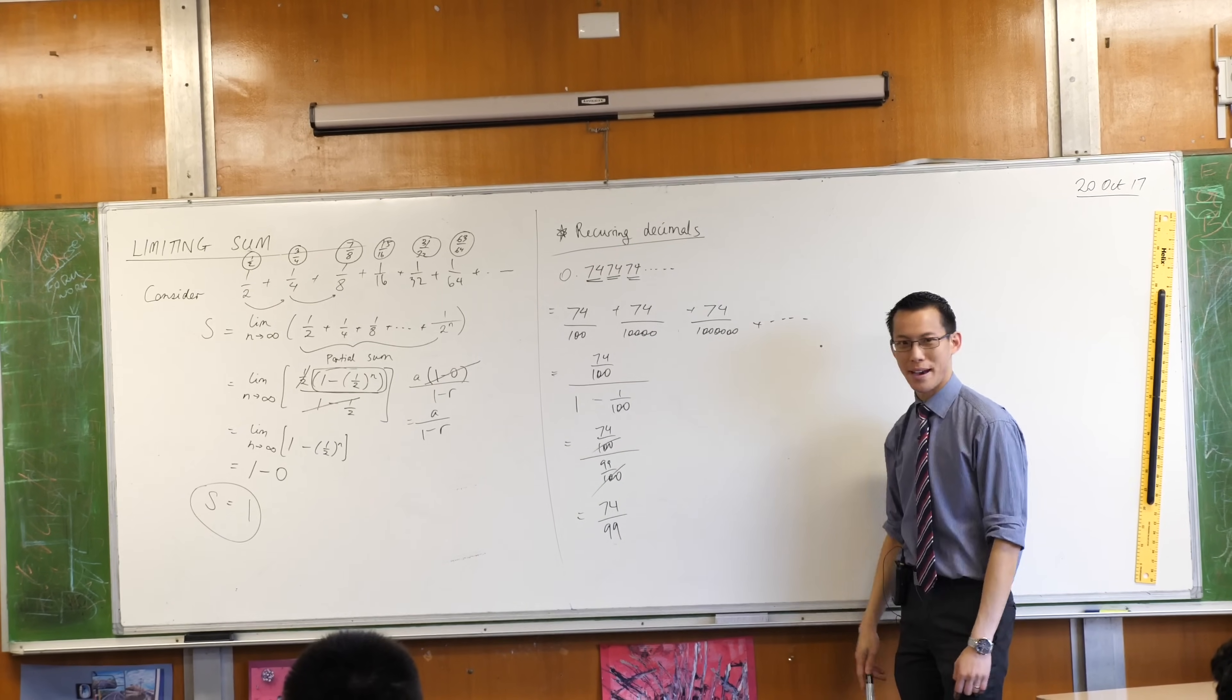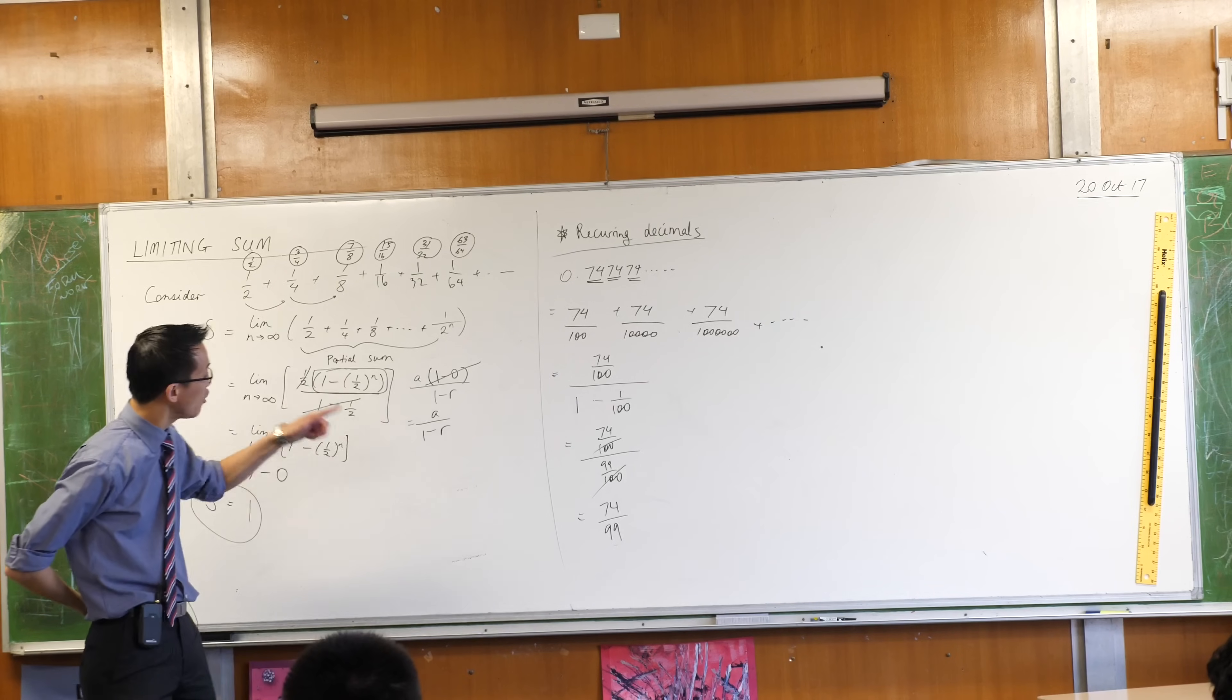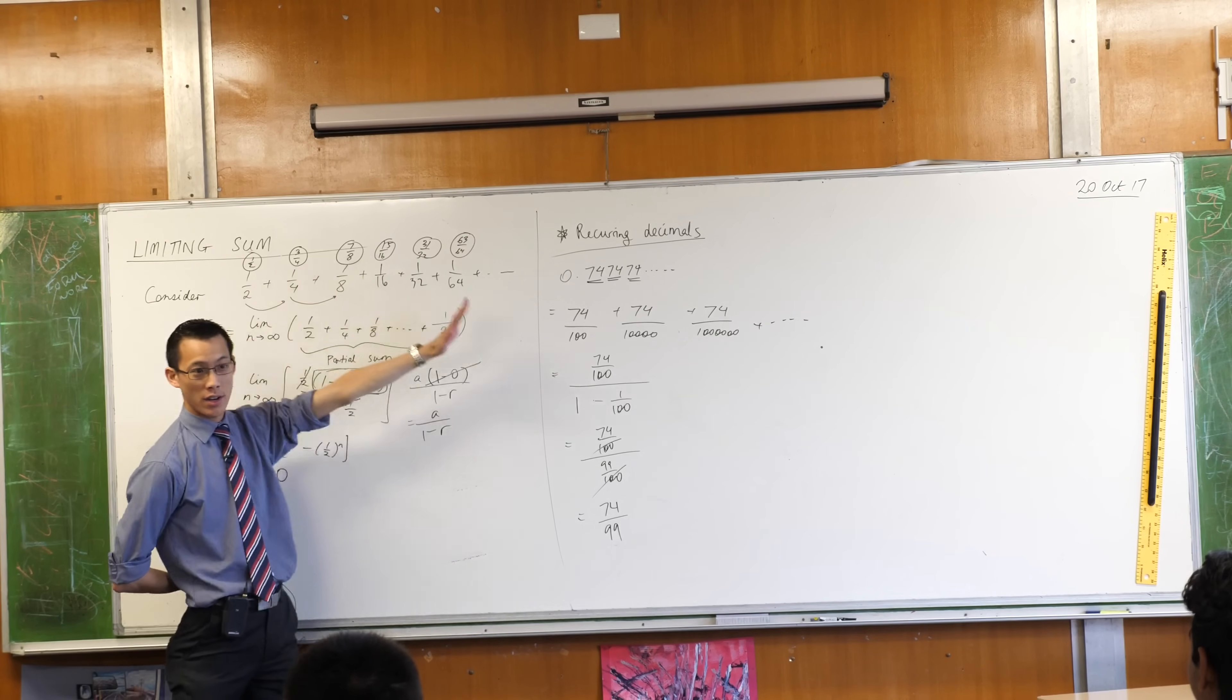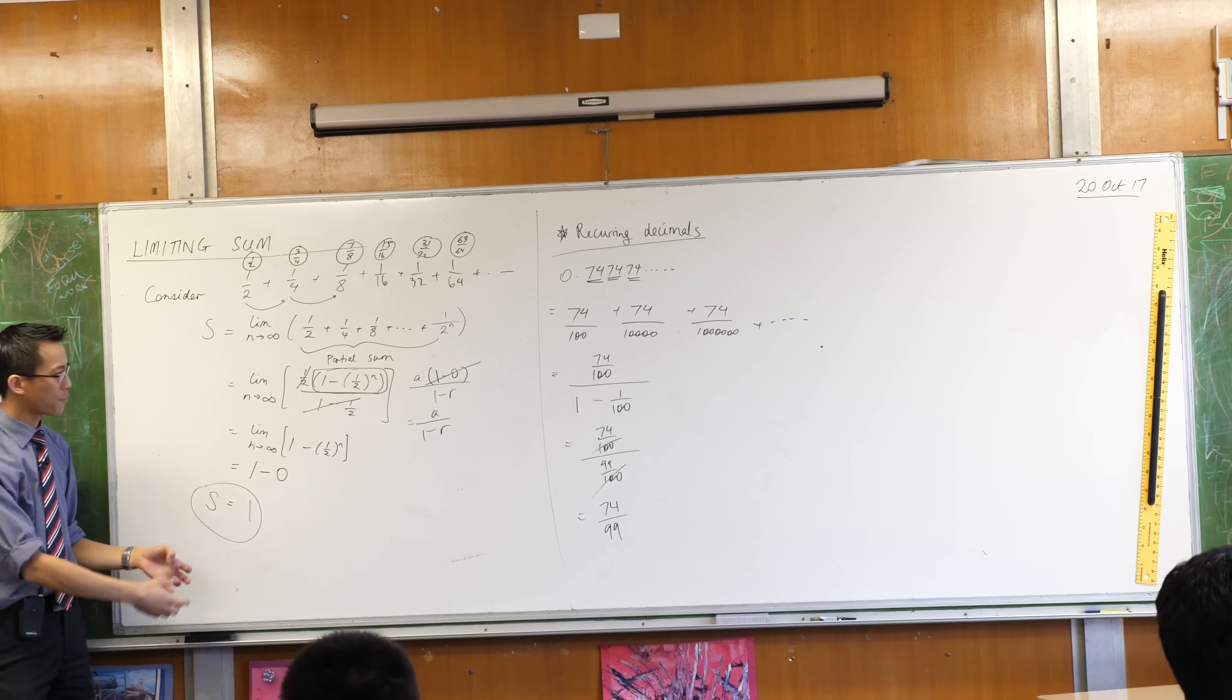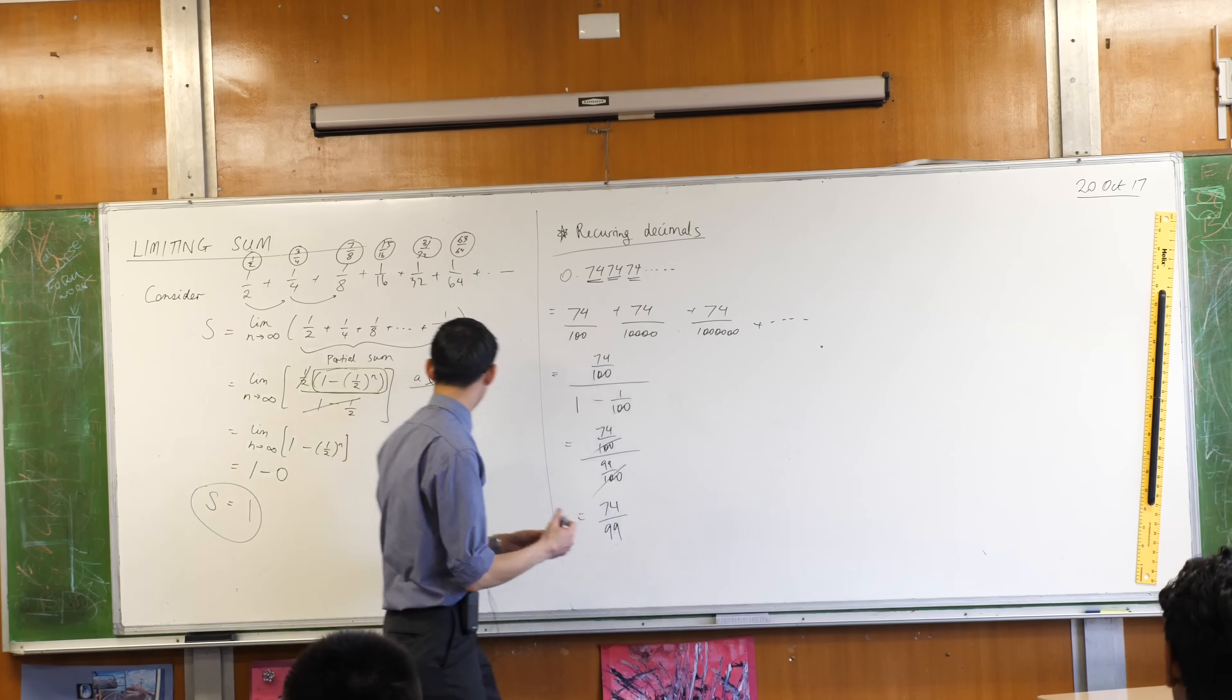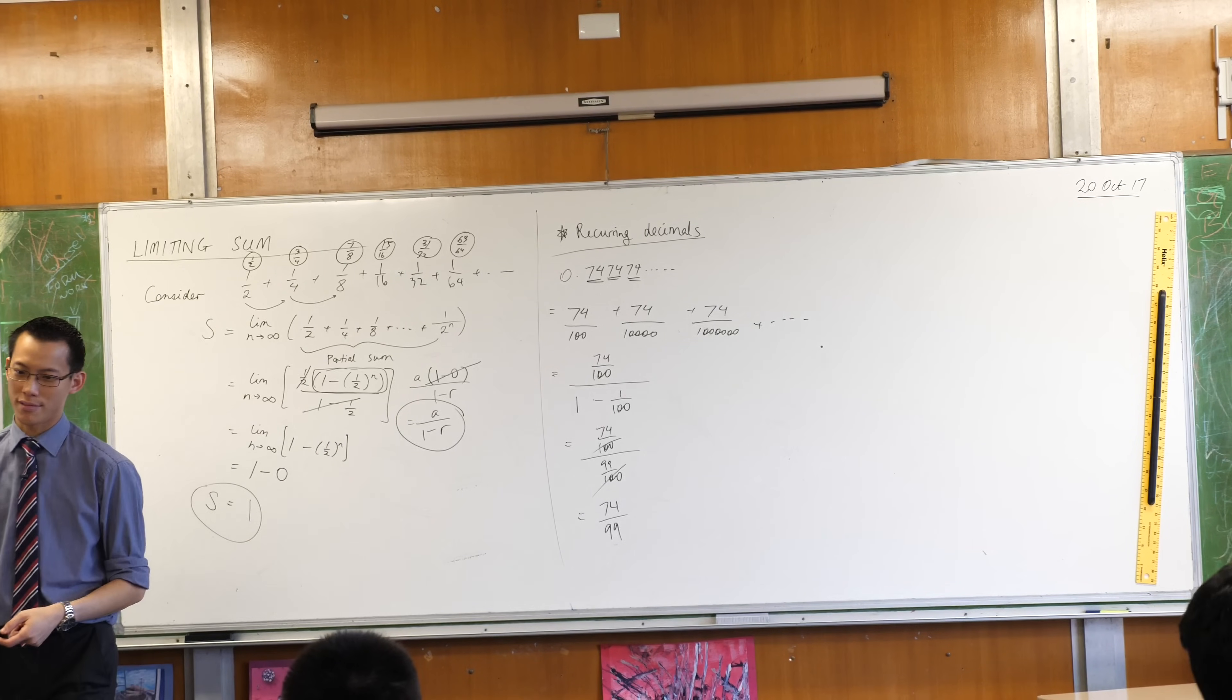We couldn't tell you back then about geometric progressions because you would have thrown your books at us. Okay? But now you know that there are such objects as these series that go on forever. Despite going on forever, you can express them in a finite way. And this formula... Oh man, I keep doing this. This formula here is what gives us that result. Okay?